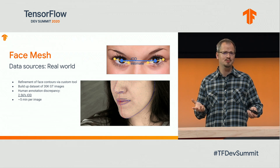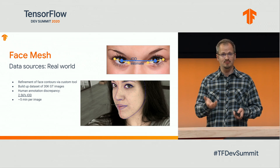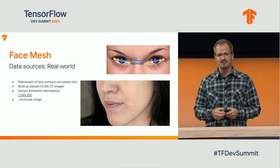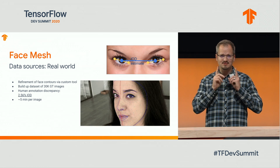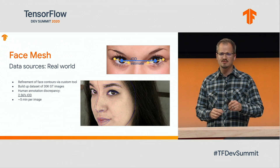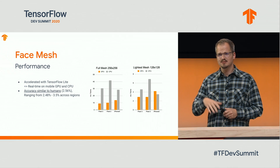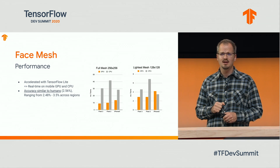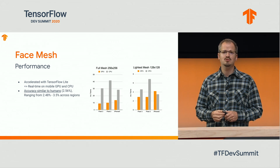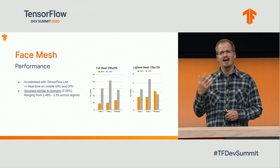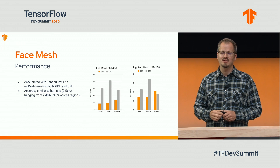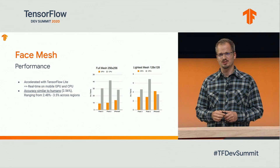One interesting question is how good humans are at this annotation task. If you give the same image to several annotators and measure the variance, they tend to agree within 2.5% of the interocular distance — the distance between your pupils — which is kind of the gold standard we want to hit with our ML models. We trained a variety of model capacities, some lighter and some heavier, all running in real time via TF Lite GPU or TF Lite CPU. The heavier models come very close to human performance, and the difference is fairly small across different regions of the Earth.